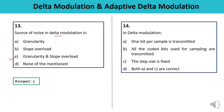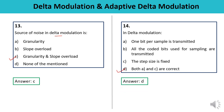Question 14: In Delta Modulation — one bit per sample is transmitted (yes, correct), all the coded bits used for sampling are transmitted (no), and the step size is fixed (yes, correct). Since statements A and C are both correct, the answer is D.